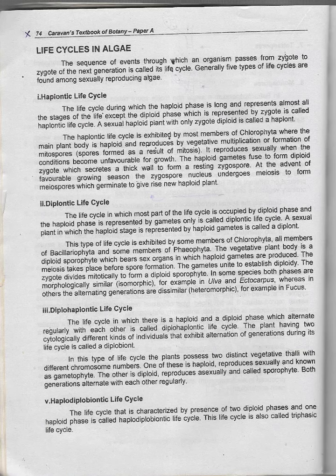Now, there were 5 types of life cycles. First of all, the life cycle is the haplontic life cycle. In the haplontic life cycle, the haploid phase will be long and will represent all stages of life except the diploid phase. The diploid phase will represent only the zygote.